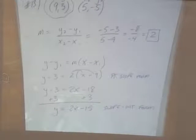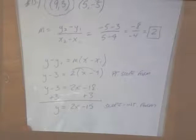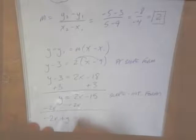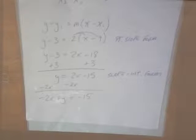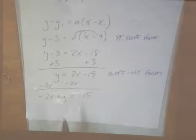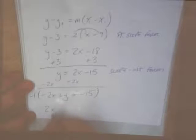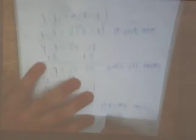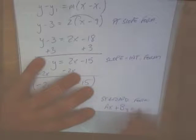What's the last form that we haven't done yet? Standard. Standard form. What's standard form? A, X plus B, Y equals C. A, X plus B, Y equals C. So I've got to get the X and Y on the left-hand side. Okay, so we'll subtract the 2x over. So we'll end up with negative 2x plus Y is equal to negative 15. And then there's a rule that says that A value has to be greater than 0. So we will multiply everything by negative 1, so we'll end up with 2x minus Y is equal to 15.